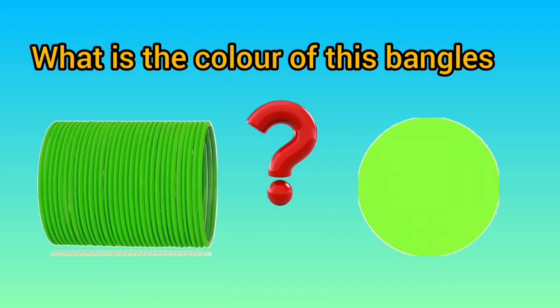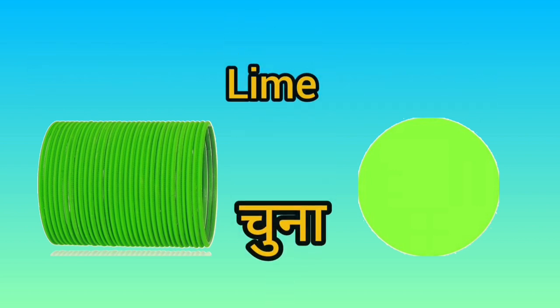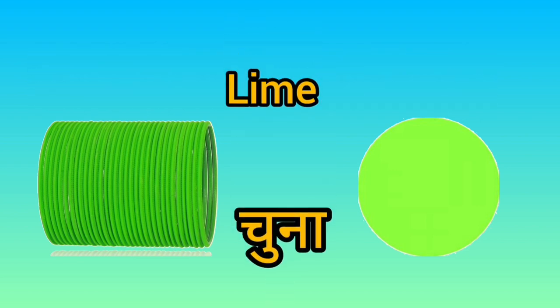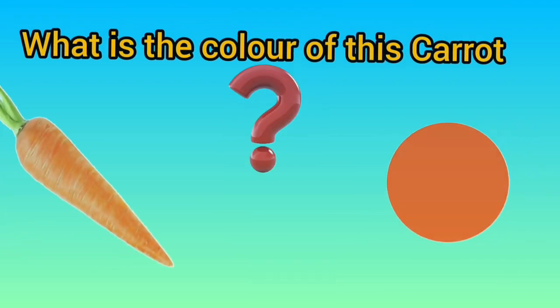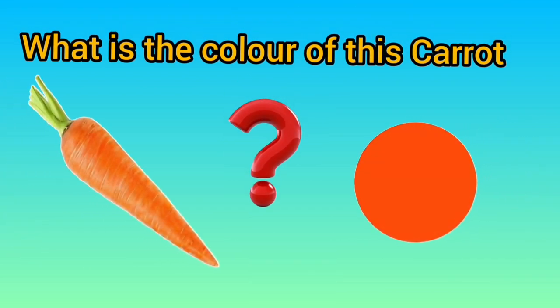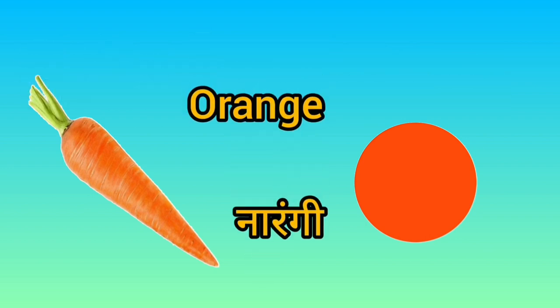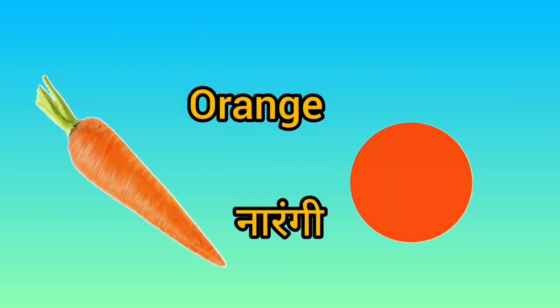What is the color of this bangles? Lime means Tuna. What is the color of this carrot? Orange means Narangi.